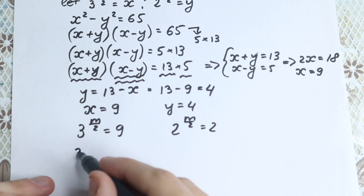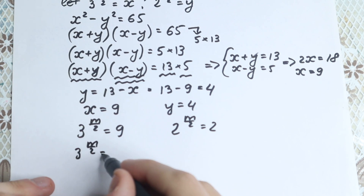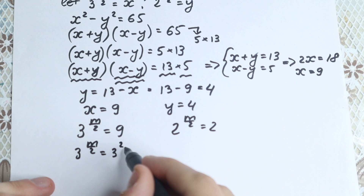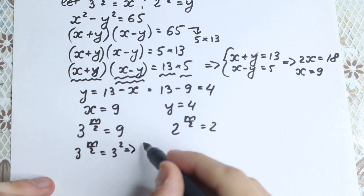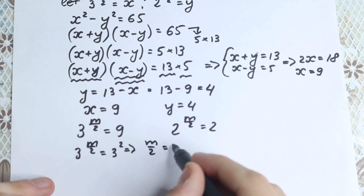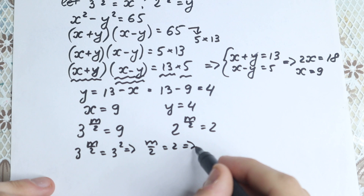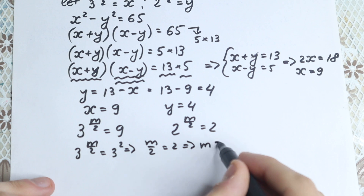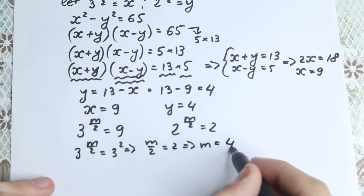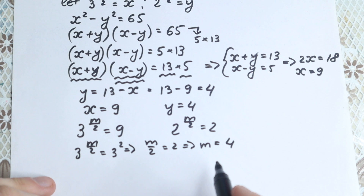So x equals 3 to the power m over 2, meaning 3 to the power m over 2 equal to 9. We can write 9 as 3 squared, so m over 2 equals 2, which gives m equal to 4. We have solved the problem.